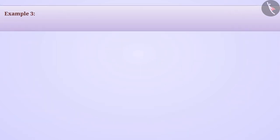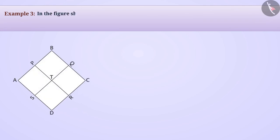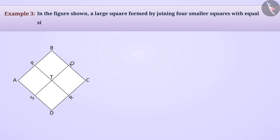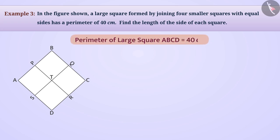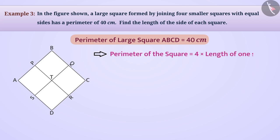Next example: in the figure shown, a large square is formed by joining four smaller squares with equal sides, and has a perimeter of 40 centimetres. Find the length of the side of each smaller square. We are given that the perimeter of large square ABCD equals 40 centimetres, and we know that the perimeter of a square is equal to 4 multiplied by the length of one side.